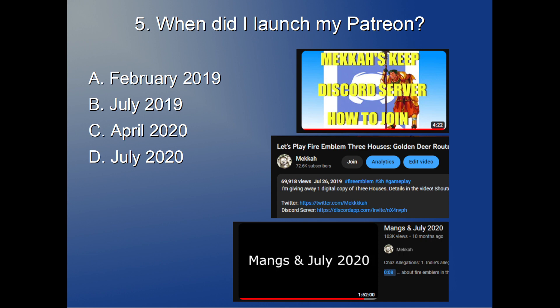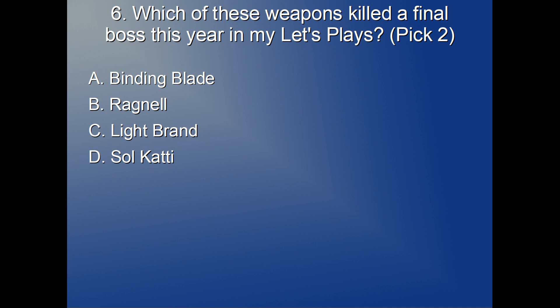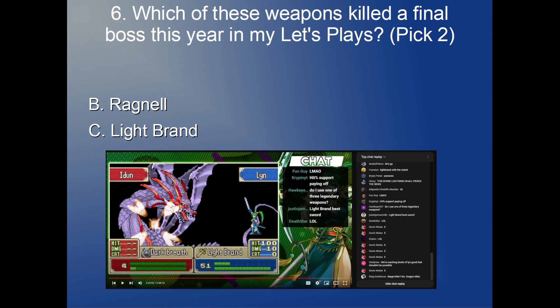Question six: which of these weapons killed a final boss this year in my let's plays? Pick two — there are two correct answers and two wrong answers. Your options: the Binding Blade, Ragnell, the Light Brand, and the Soul Katti. The correct answers were the Ragnell and the Light Brand. The Ragnell is pretty obvious — that's Path of Ignorance, where I killed Ashera. There's not much else you can do there unless you use Giffca.